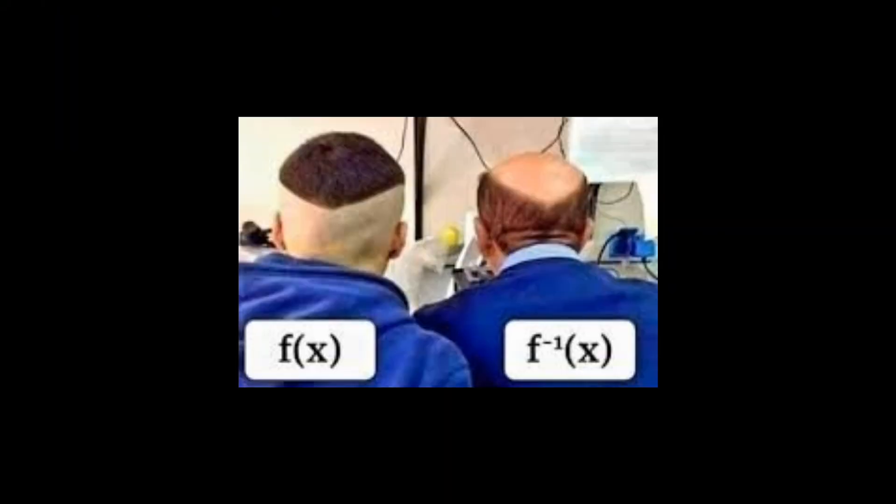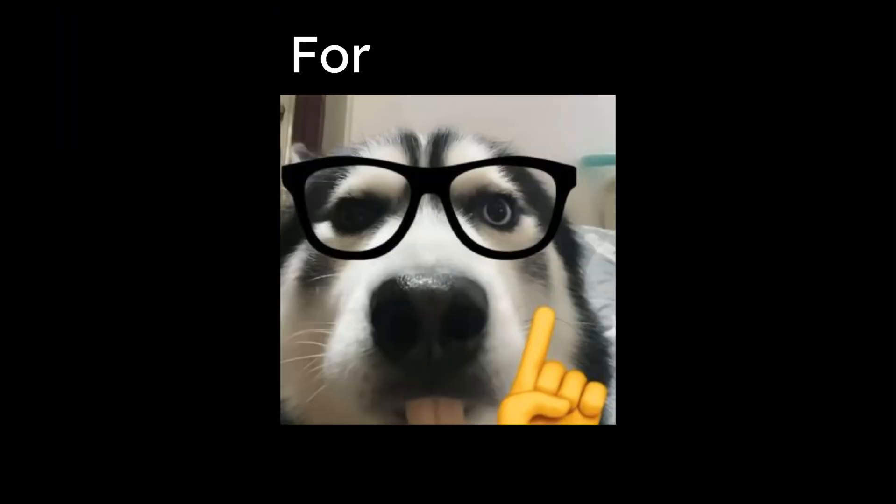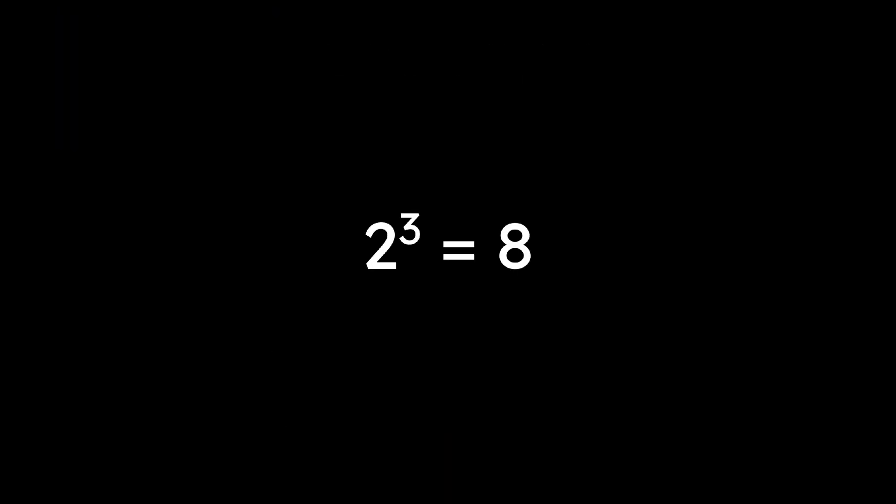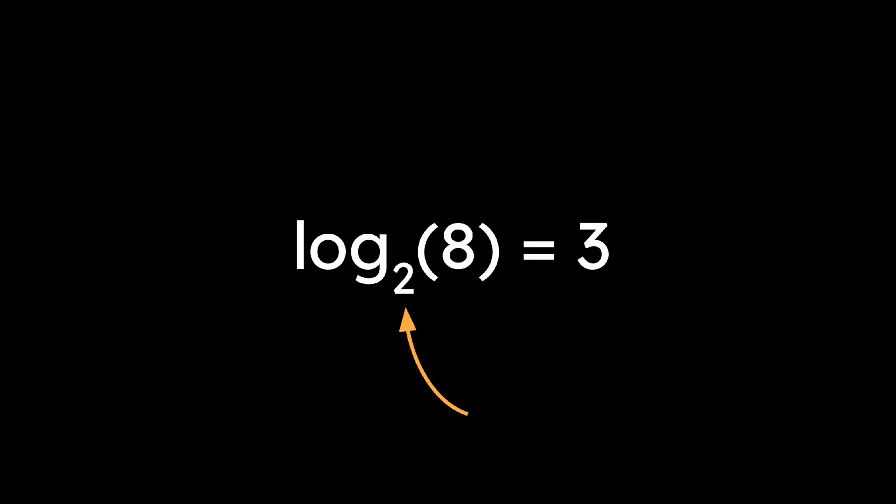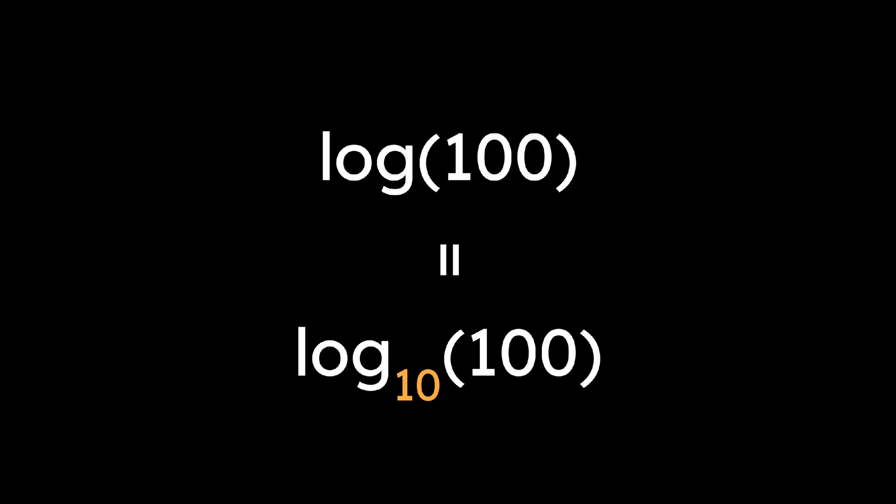Alright, logarithms are the inverses of exponentials. For example, if 2 cubed is 8, then log 2 of 8 is 3. Now if you don't specify this number, or what we call a base, then people will automatically assume that your base is 10. If you write ln of something for natural logarithm, it means that the base is e, which is approximately 2.718.